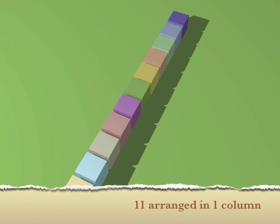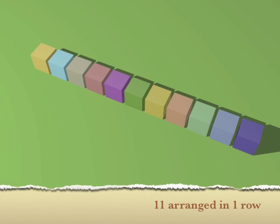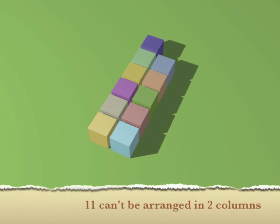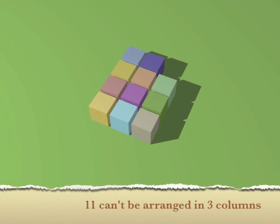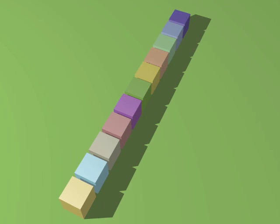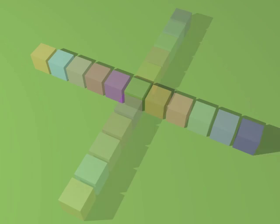Let's look at another odd number — eleven. Eleven can be arranged as a single column or a single row. If we try two columns, we haven't got enough blocks to complete it, and three columns still leaves a gap. So eleven only has two arrangements, just like two, three, five, and seven — those numbers are prime.